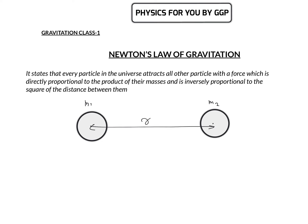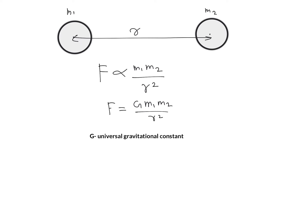We are considering two point masses m1 and m2 separated by a distance r. The gravitational force is always attractive in nature. The force of attraction is directly proportional to m1 times m2 and inversely proportional to r squared. So we write F = G·m1·m2/r², where G is known as the universal gravitational constant. We will discuss its value and other related things in detail.